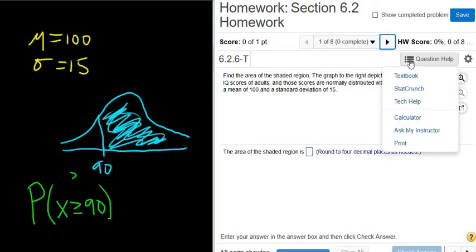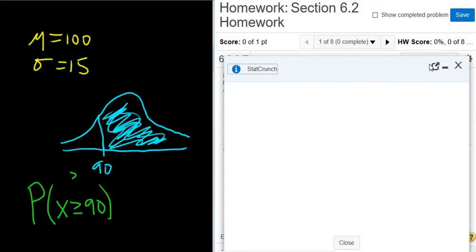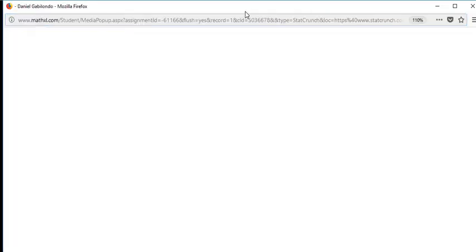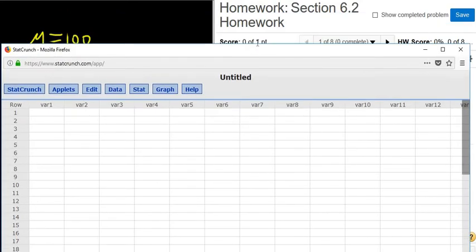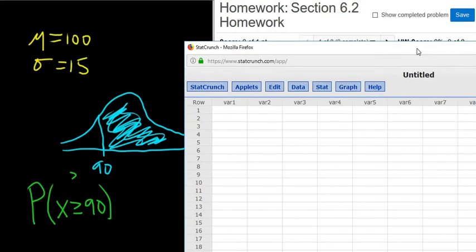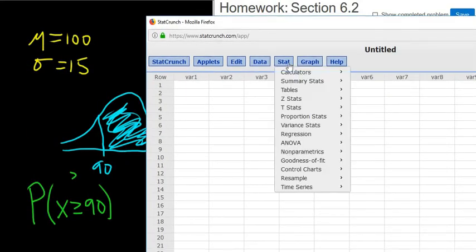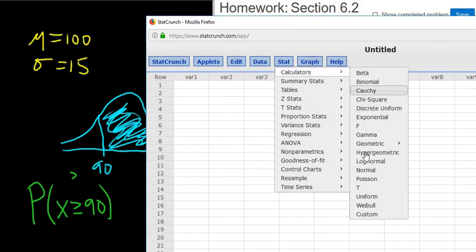So we click where it says question help and we go to StatCrunch. OK. I'm going to detach it, make it a little bit easier to see. All right. Good stuff. So we go to stat, calculators, normal.